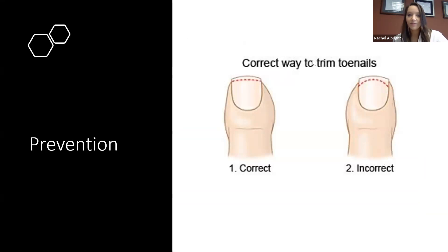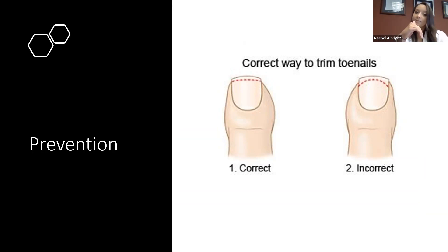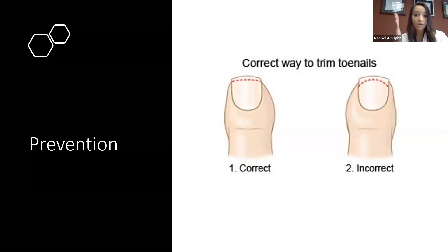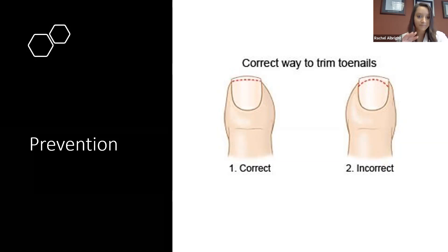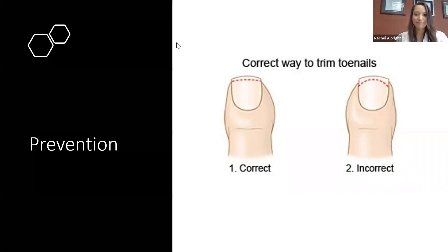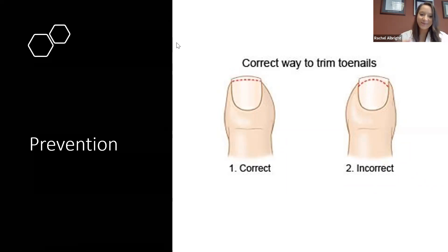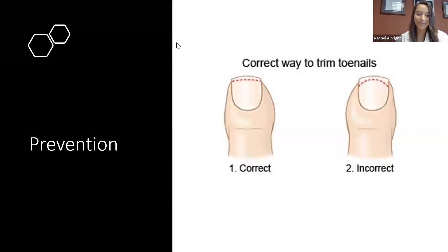To prevent ingrown toenails in the future, there is a right and wrong way to cut your nails. Cut them straight across — do not angle them, as that encourages an ingrown. If the corners feel sharp after cutting straight across, use a nail file to gently round those corners off. Do not dig an instrument into the corner. I've seen a 12-year-old boy develop five separate ingrowns simply because he slanted his nails every time he cut them.